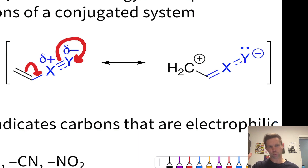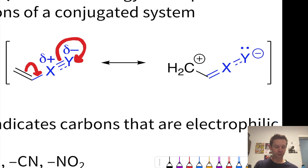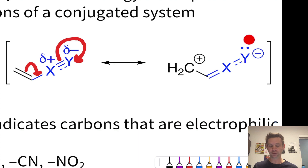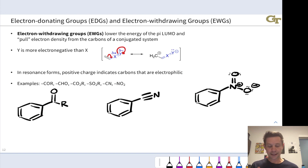X being partially positive means it wants to pull electrons toward itself. If there's an attached unsaturated or conjugated system linked to X, we can push electrons from the conjugated system into a new carbon-X double bond, and push the X-Y pi electrons onto Y to create a resonance structure where negative charge is now inside the electron withdrawing group. The group has literally withdrawn electrons from the attached unsaturated system, leaving it positively charged and electron deficient. Those carbon atoms that end up positively charged in resonance forms involving electron withdrawing groups are especially electrophilic.